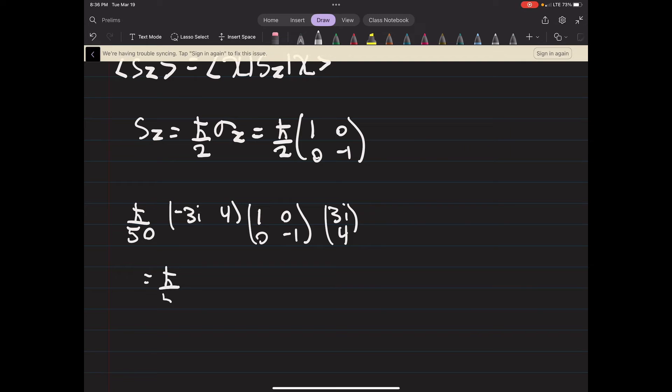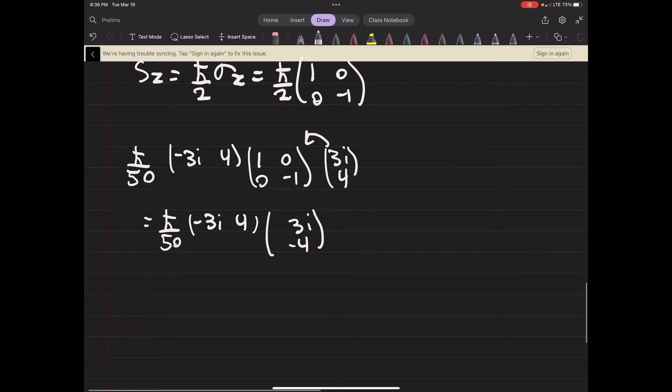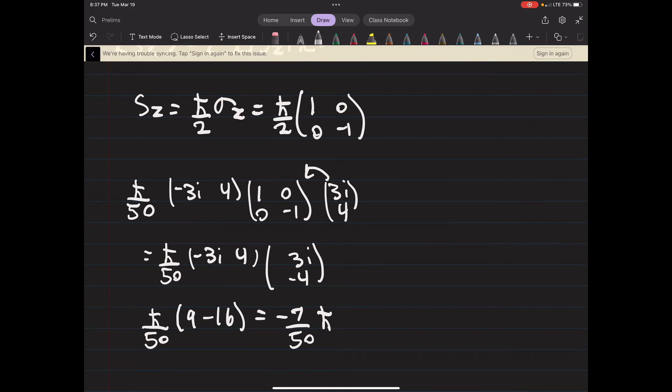So h bar over 50, multiplying these matrices together - let's see, that's going to be... well let's write this out first. That's going to be (3i, -4). So we have h bar over 50, and let's see that's going to be -9i squared, so that's going to be positive 9 because the i squared, minus 16. Which is going to be -7 over 50 h bar. 7 over 50 can't be simplified so that's all our expectation values.